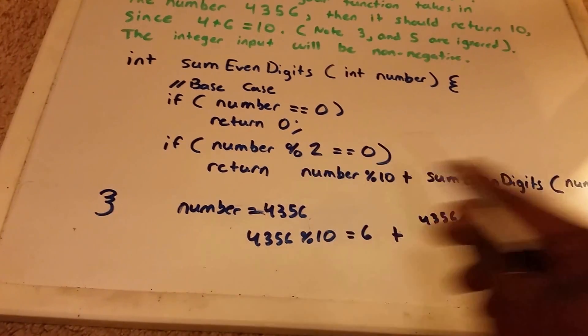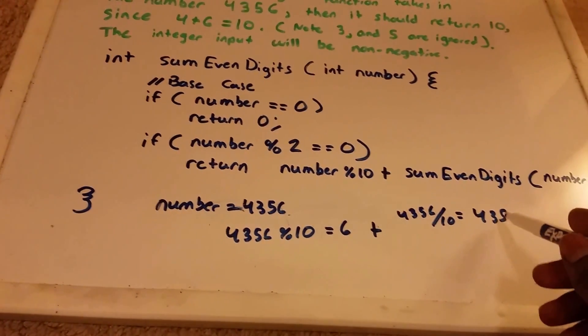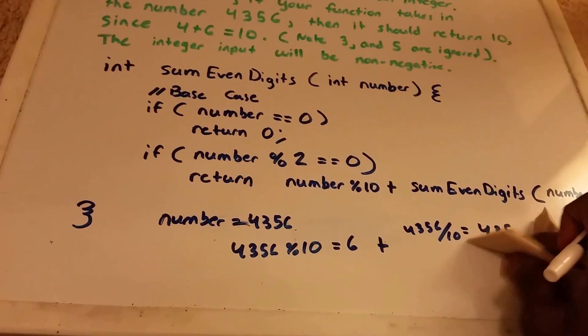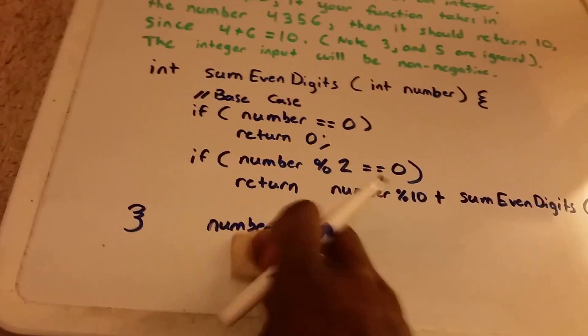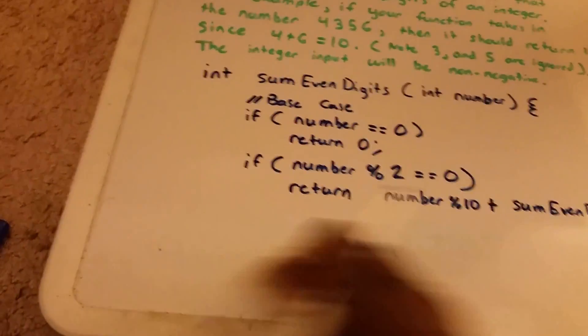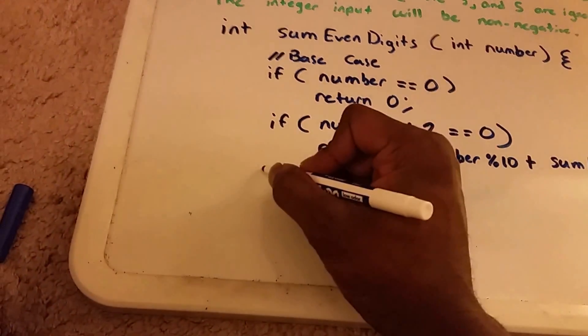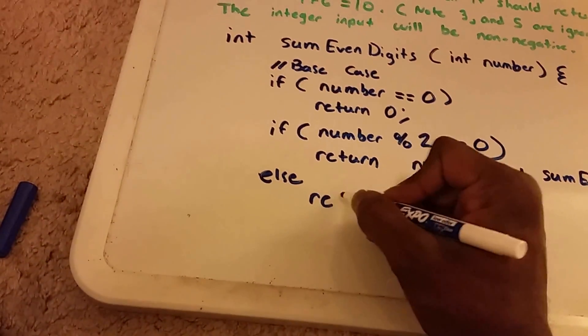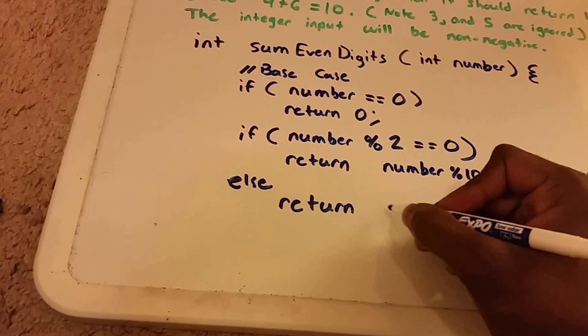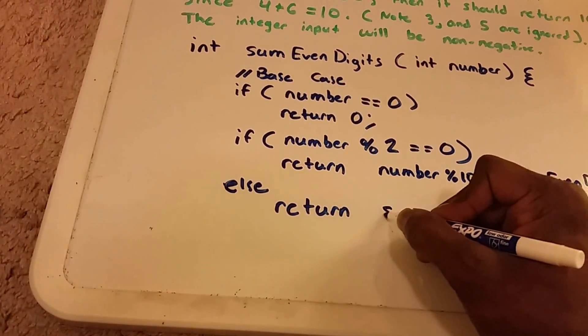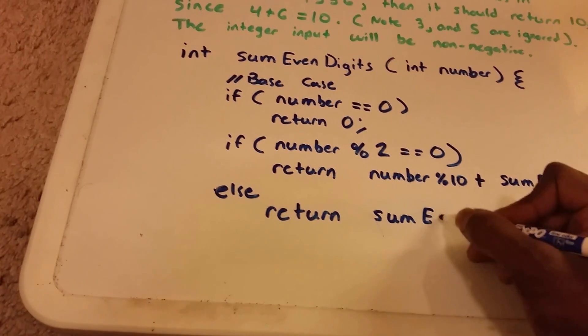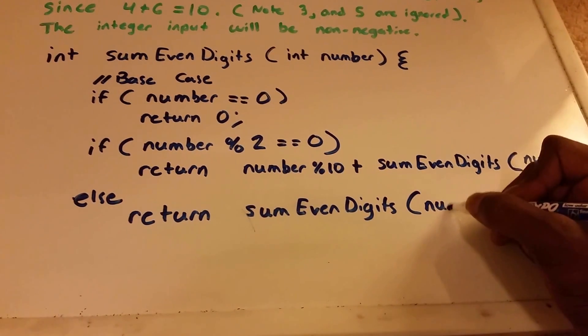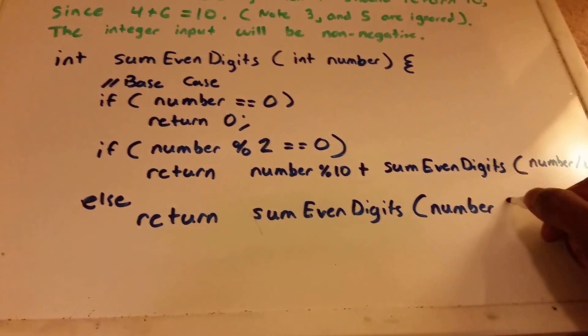We see that number does not equal an even number. It equals an odd number. So we need to do something for that case as well, for the odd case. So else, if the number is not even, then it's odd.